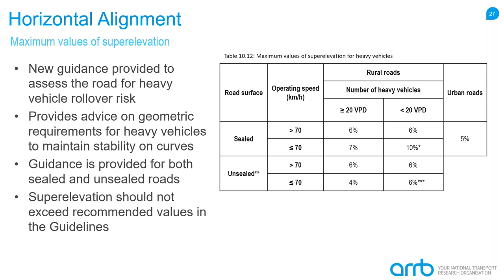The guideline provides recommendations for both maximum and minimum curve super elevation. The table shows how road surface type — sealed or unsealed — operating speed, rural or urban road, and traffic volume determine maximum super elevation values. Exceeding these recommendations is possible as long as the risk is understood and mitigating treatments are in place, but it is not recommended.